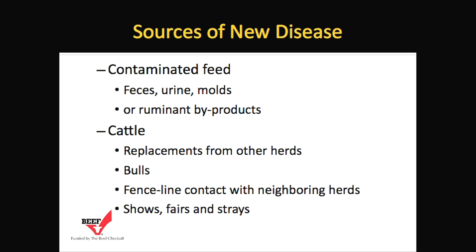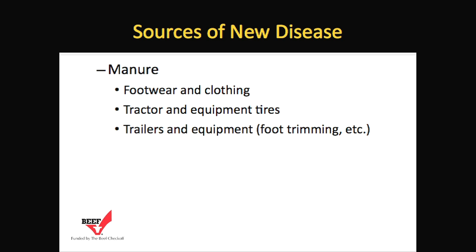Cattle moving into and out of your operation, particularly replacements from other herds such as bulls or replacement heifers, or fence line contact with neighbor herds, or cattle that have gone to shows and fairs, or animals that have strayed onto your property are also disease risks. Another source would be manure on footwear and clothing, tractor and equipment tires, trailers, and processing equipment such as foot trimming tables.